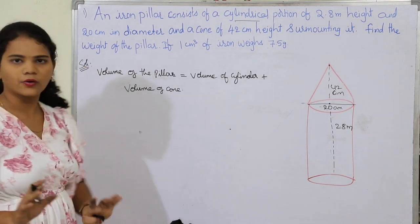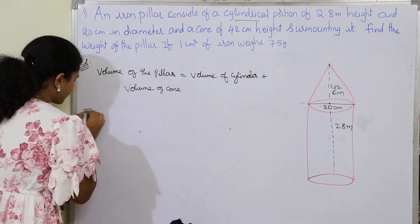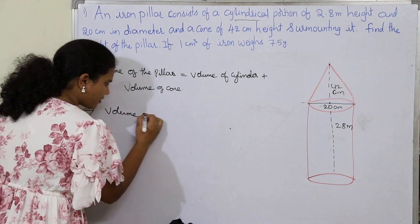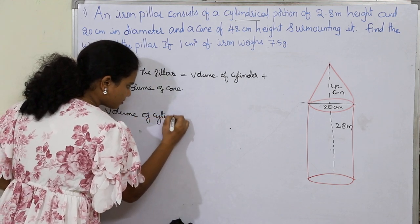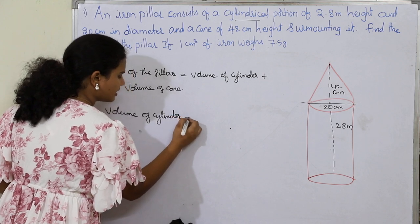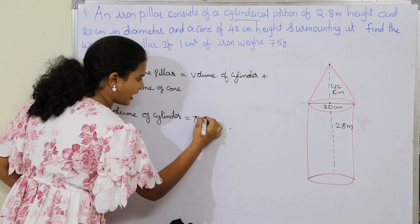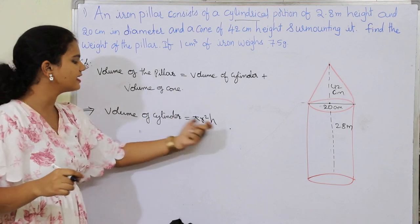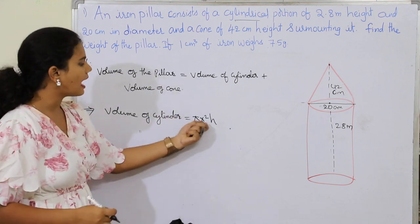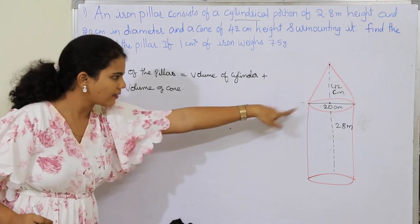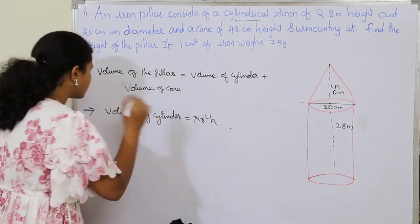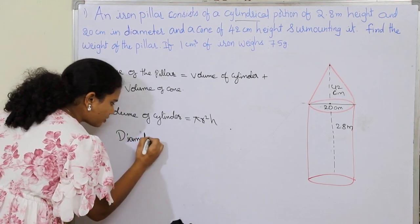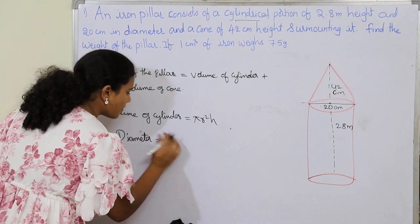First let's find the volume of the cylinder. The formula for volume of cylinder is πr²h, where pi equals 22/7. I have the diameter value but not the radius. Since diameter equals 20 centimeters, I need to find the radius using radius equals diameter divided by 2.